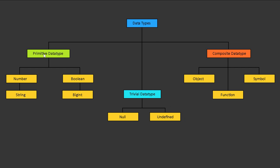There are three categories of data types in JavaScript called primitive, trivial, and composite. Under primitive data types we have number, string, boolean, and bigint. Under trivial data types we have null and undefined. Null, as we're going to find out, is actually treated as an object data type in JavaScript, so it's not in itself a data type. And finally under composite data types we have object, symbol, and function. So these are the three categories and all the data types in JavaScript.